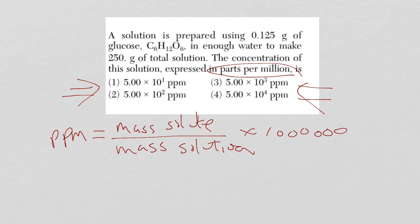So remember solution, that's your solute plus solvent. So the mass of the solute is the glucose, that's 0.125 grams. The mass of solution is going to be 250 plus the 0.125 grams times one million.